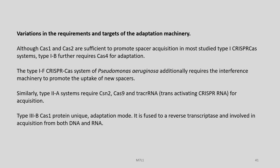Type 1B requires Cas4 for adaptation. The type 1F CRISPR-Cas system of Pseudomonas additionally requires the interference machinery to promote the uptake of new spacers. Similarly, type 2A systems require CSN2, Cas9, and tracer RNA for acquisition. The type 3B Cas1 protein has a unique adaptation mode — it is fused to a reverse transcriptase and is involved in acquisition from both DNA and RNA.